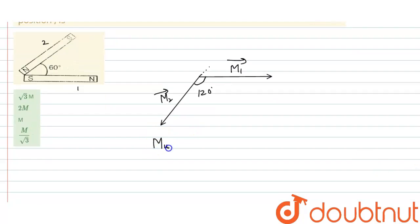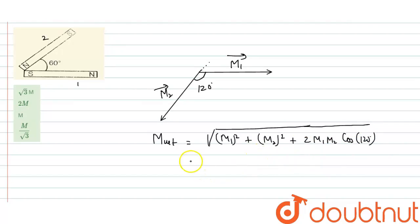Net magnetic moment is the resultant of these two, so this equals √(M1² + M2² + 2M1M2 cos 120°). Value of cos 120° is -1/2, so this equals √(M² + M² + 2M²(-1/2)) = √(M² + M² - M²). The 2 and 2 cancel out, so M² cancels out, leaving M. This equals M.